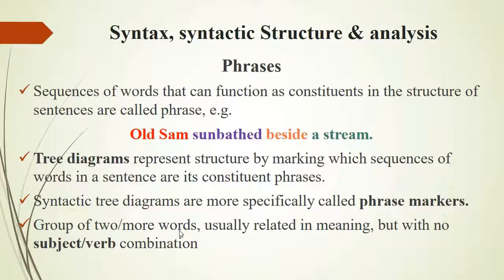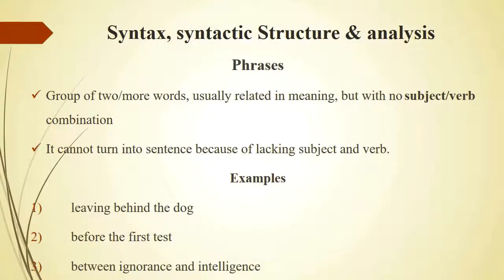A group of two or more words usually related in meaning but with no subject and verb combination is called a phrase. It cannot be turned into a complete sentence because it lacks a subject and verb. For example, 'leaving behind the dog,' 'before the first test,' 'between ignorance and intelligence' — these are groups of words, or constituents, but not complete sentences because they do not have any subject and verb.